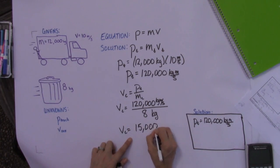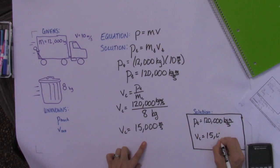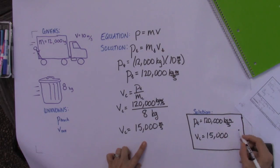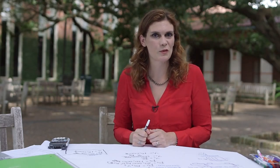And we get that the velocity of the can would have to be really fast, 15,000 meters per second. That is a speedy can. So put that in your solution box. And there you are. Problem solved. Good luck on the next problems.